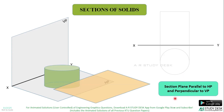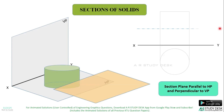Now in all the questions on sections of solids, we will be representing the section plane using a line in the orthographic projection. So you should check in which view you can see this section plane as a line. This section plane which is parallel to HP and perpendicular to VP can be seen as a line in the front view, and that line will be above the XY line. So you can draw that section plane over here like this.